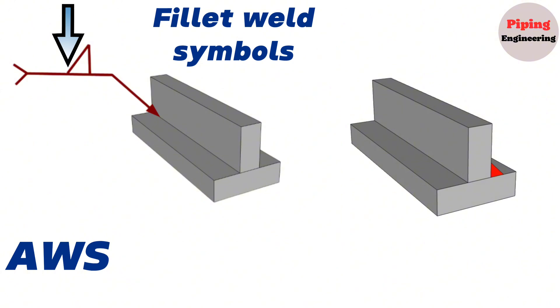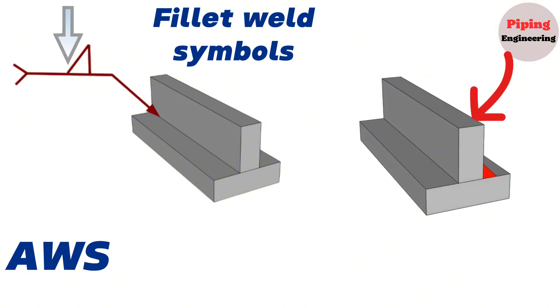If the fillet welding symbol is showing above side of the reference line, the weld is carried out on the opposite side, far side of the joint.